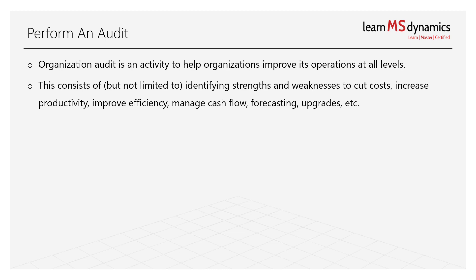An audit consists of identifying the strengths and weaknesses to improve business operations. This includes cutting costs to increase profitability, increasing team productivity, improving efficiency, managing cash flows, forecasting, upgrades, and much more. It helps you understand where you stand right now and where you want to go, because without knowing your current status, you can't improve or move forward.